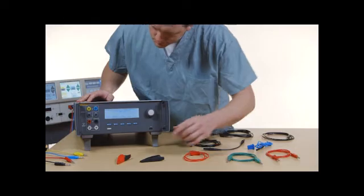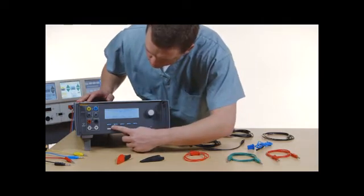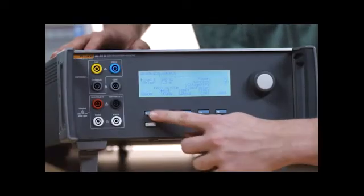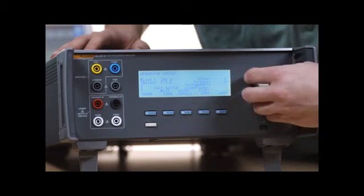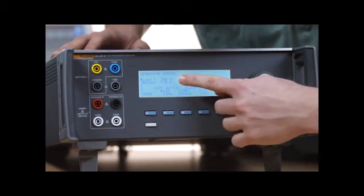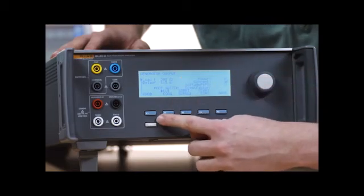To perform a generator output test in monopolar mode, push F1 from the menu. Turn the rotary knob to set the load resistance. 200 ohms is recommended.